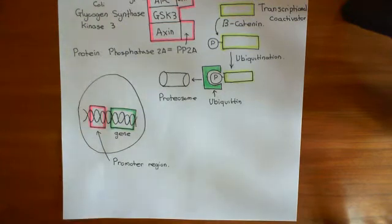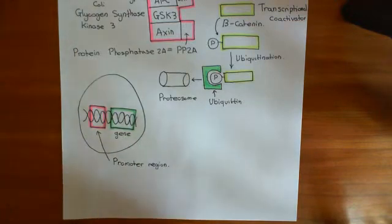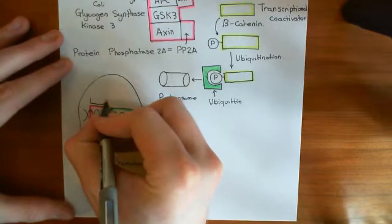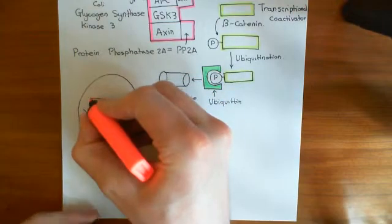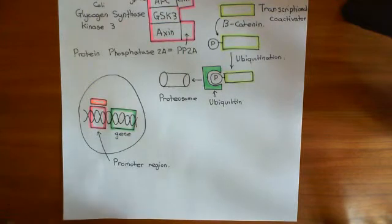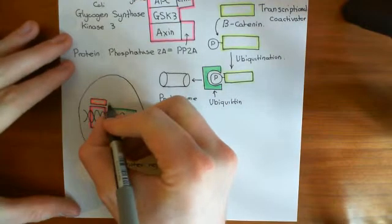The affinity of the promoter region for RNA polymerase controls the expression of the gene and how much gene product you actually produce. A transcription factor is a molecule which binds to the promoter region and alters the affinity of that promoter region for RNA polymerase. Transcription factors can both increase or decrease that affinity — if they increase it, they promote expression; if they decrease it, they repress expression.